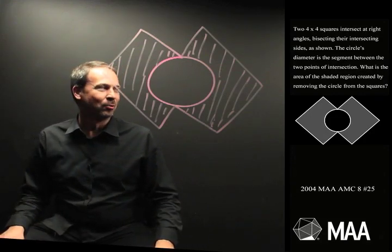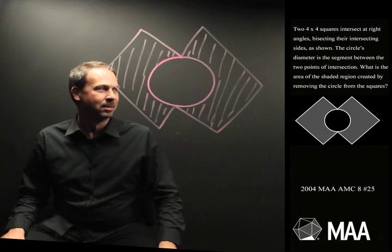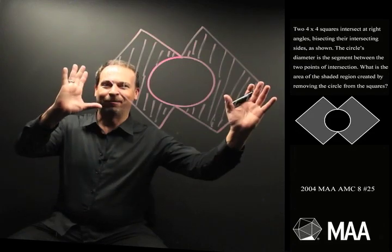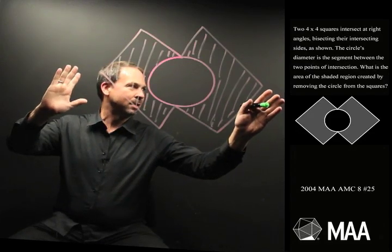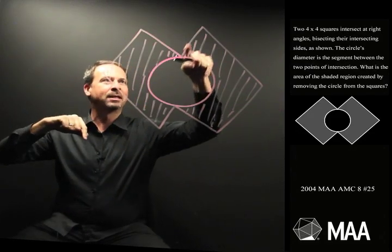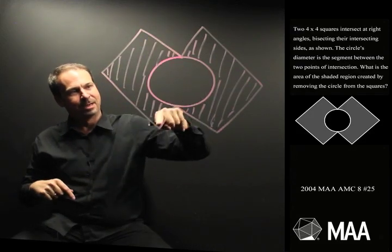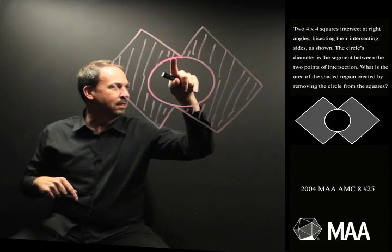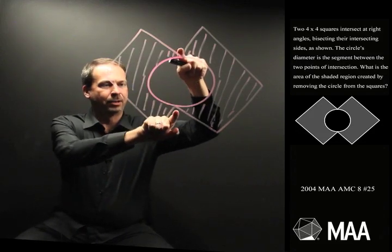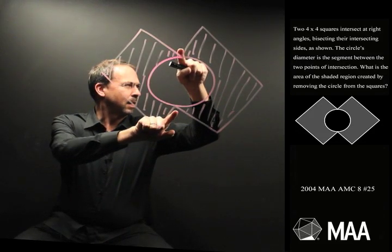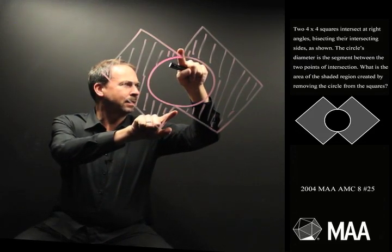Two 4x4 squares intersect at right angles, bisecting their intersecting sides as shown. I've drawn a very bad version of this problem, but it's got two squares, they're 4x4. Here's a 4x4 square, so just bits of it going in the middle circle, another one here. They intersect at right angles, 90 degrees, bisecting their intersecting sides.